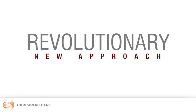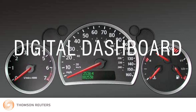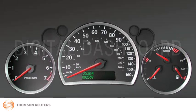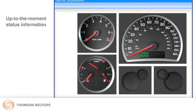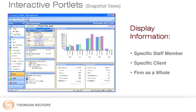These critical tasks can easily be accomplished with the revolutionary new approach to practice management we call the digital dashboard. Just as a car's dashboard displays all the critical information necessary for the driver to determine the status of operation, with Practice CS you get the same up-to-the-moment status information for you and your staff with the completely customizable digital dashboard. Each dashboard contains a collection of interactive portlets or snapshot views that display information about the specific staff member, the specific client, or the firm as a whole.